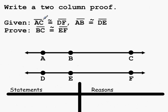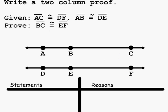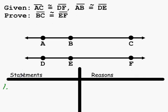In this example, we need to write a two-column proof. Given that segment AC is congruent to segment DF and segment AB is congruent to segment DE, we need to prove that segment BC is congruent to segment EF. The given information is that this big segment AC is congruent to segment DF, and this smaller segment AB is congruent to segment DE. As with any proof, our first statement is going to be about the given, and the reason is that it is our given information.